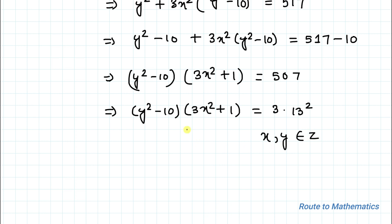Since x and y are both integers, we can say that 3x² + 1 cannot be a multiple of 3, because we have +1 with 3x². So 3 can't be the solution. The other factor, 13² = 169, is also not possible for 3x² + 1.